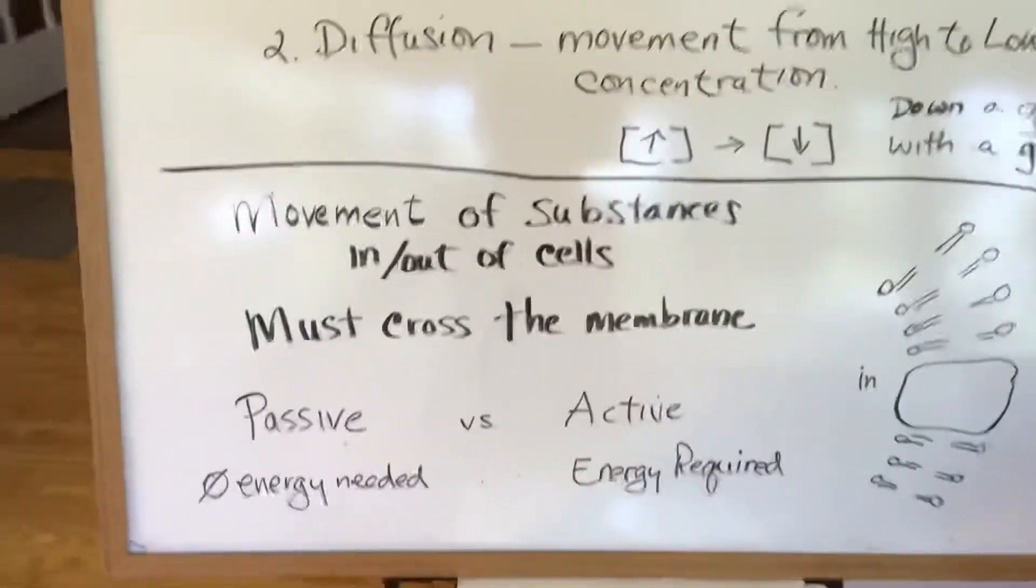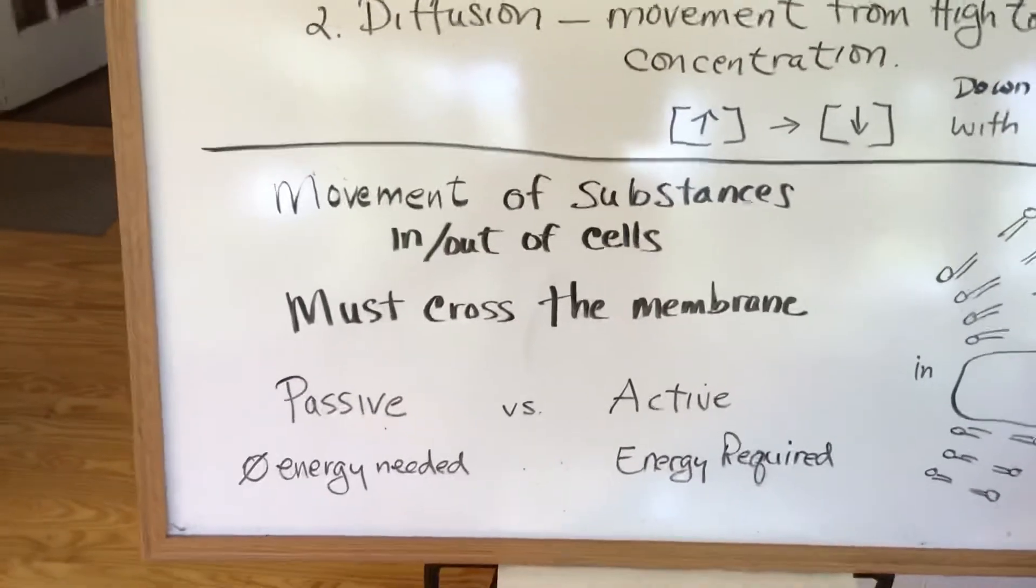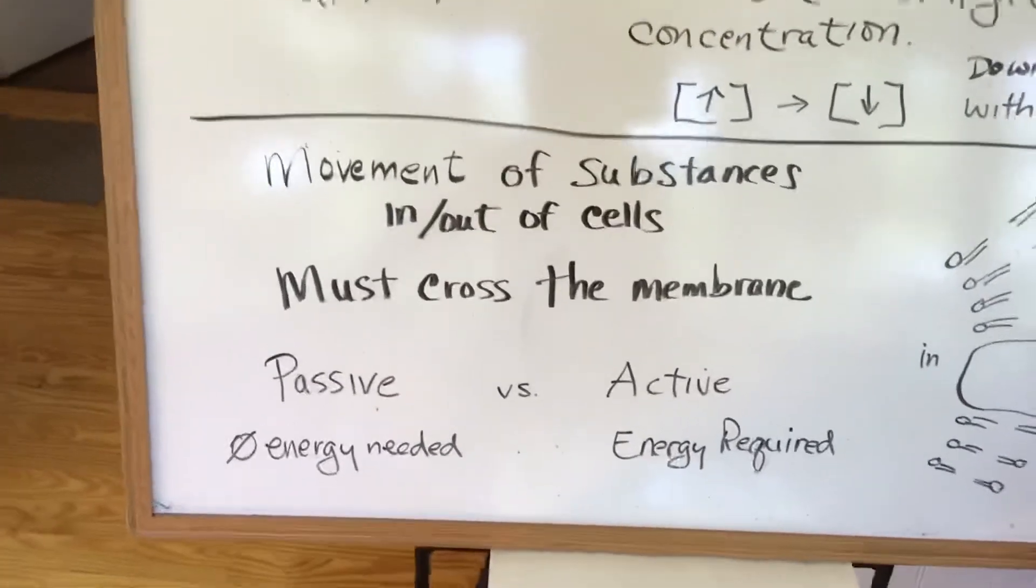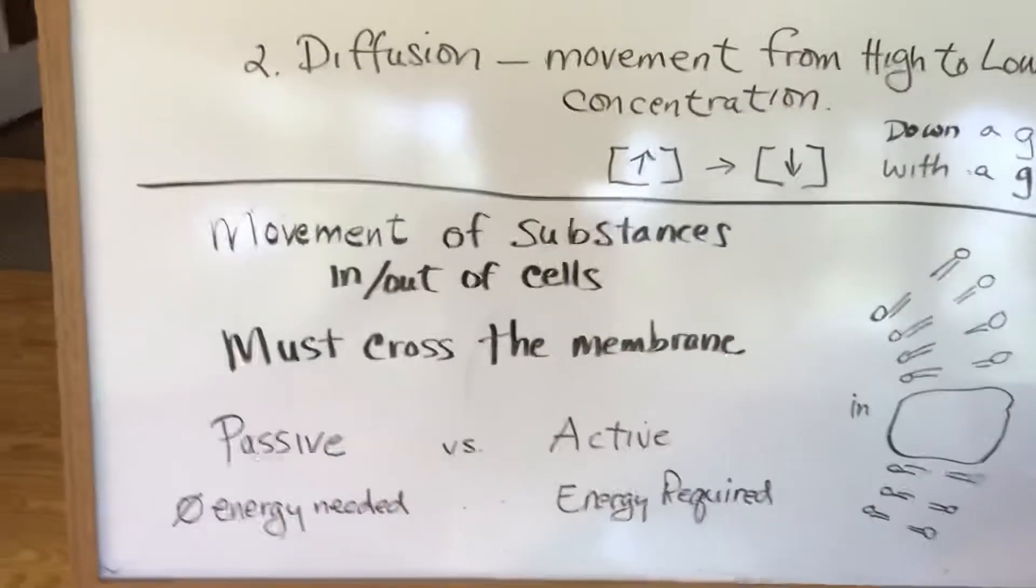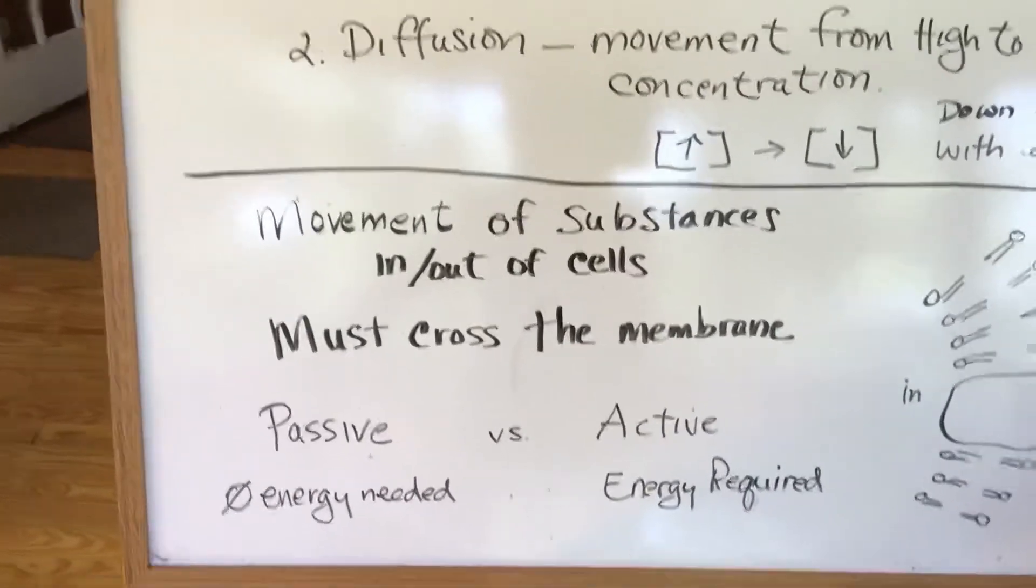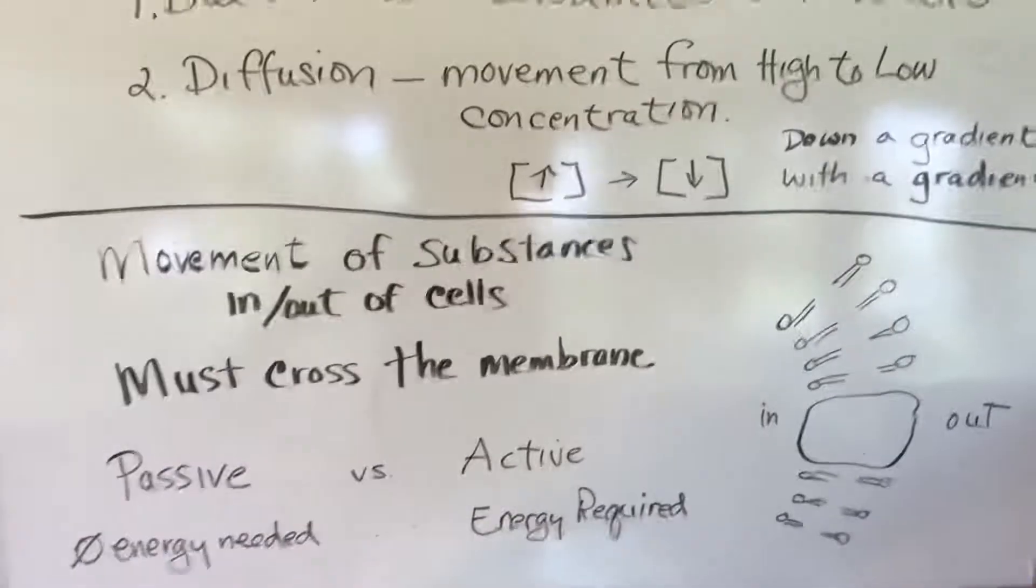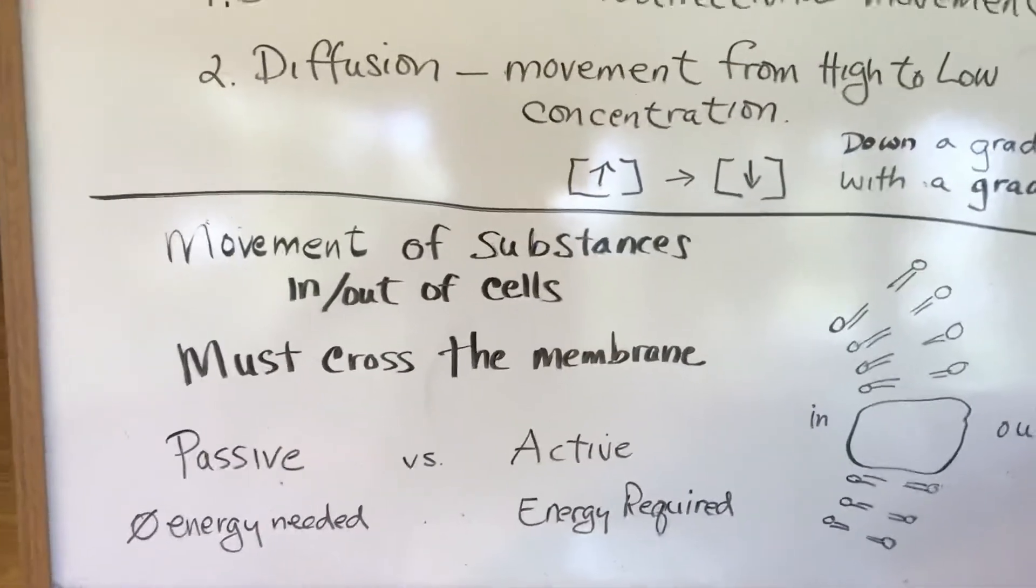It can either be passive or active. If it's passive, that means it will basically happen by this diffusion process. And no energy is required for that because it's just happening with this diffusion gradient or down a diffusion gradient.